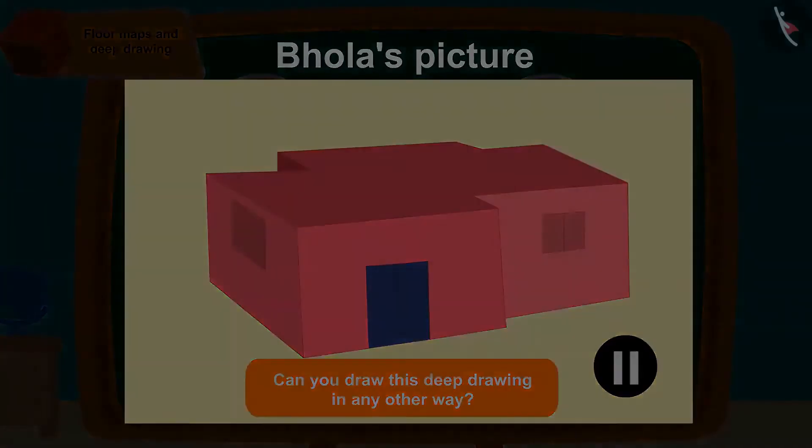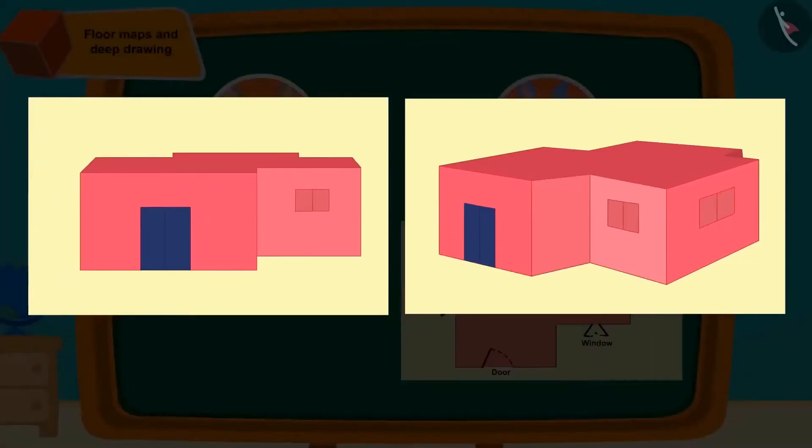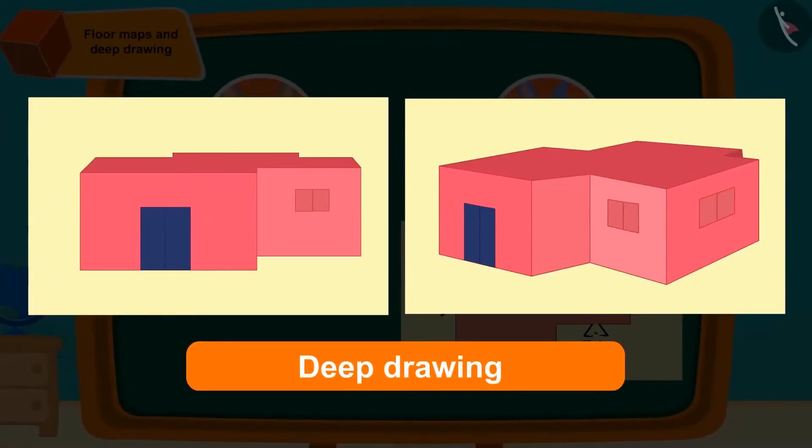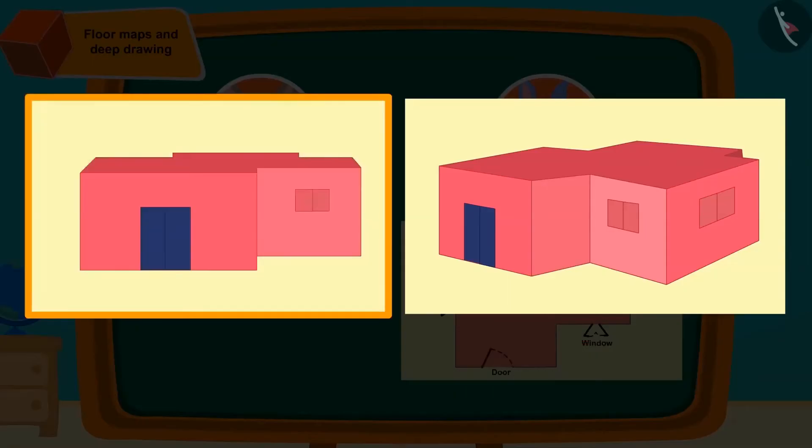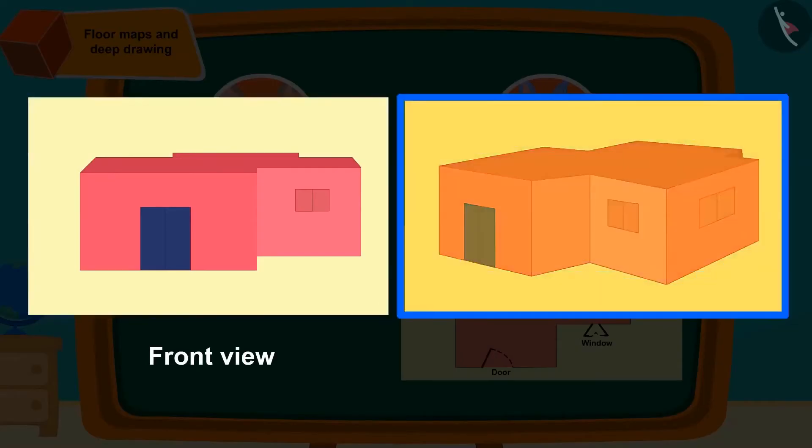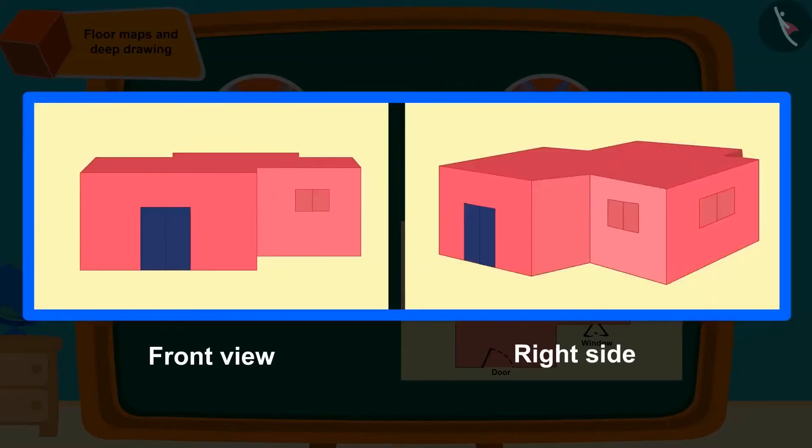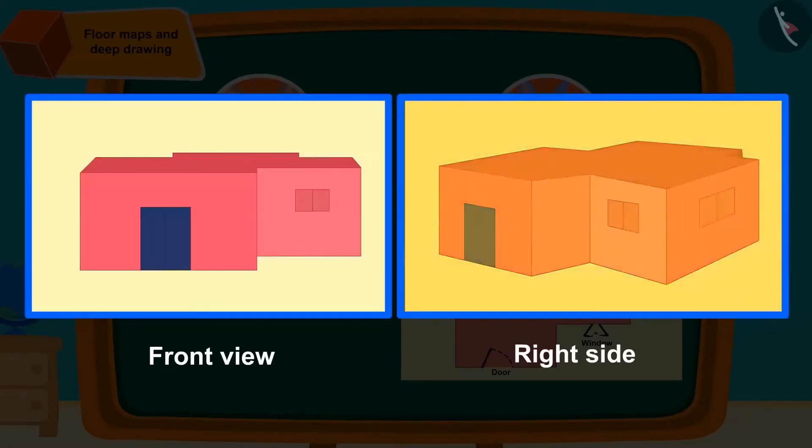Bholla can also make a deep drawing of the room in this way. Children, can you tell what is the difference between these two deep drawings? Actually, this picture is made by looking at the room from the front, while this deep picture is made by looking at the room from the right side. We can see any three-dimensional objects from different views. We will learn about it in the next video.